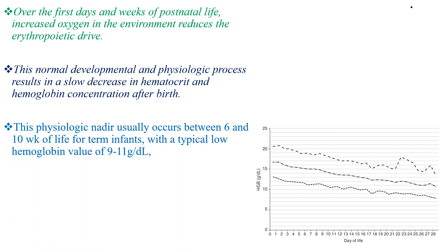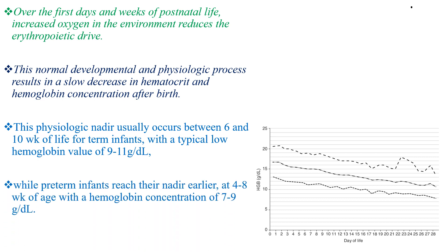As you see on the image, this progressive decline in hemoglobin and hematocrit after birth is called physiologic anemia. This physiologic nadir usually occurs between 6 and 10 weeks of life for term infants, and for preterm infants it reaches the nadir earlier, around 4 to 8 weeks of age, with hemoglobin concentration of 7 to 9 g/dL in preterm and 9 to 11 g/dL in term babies.